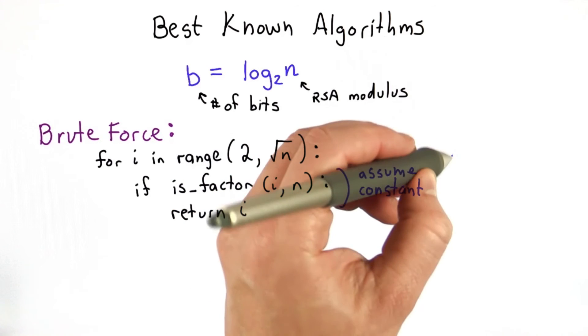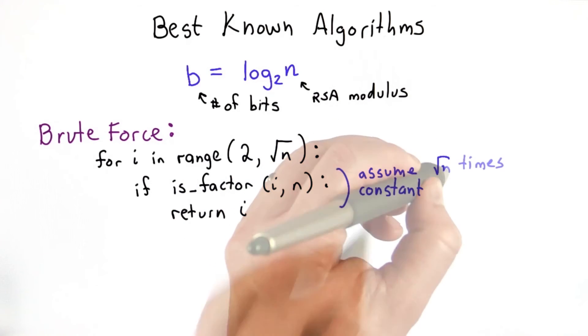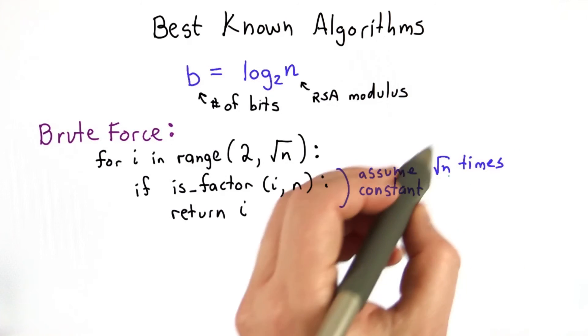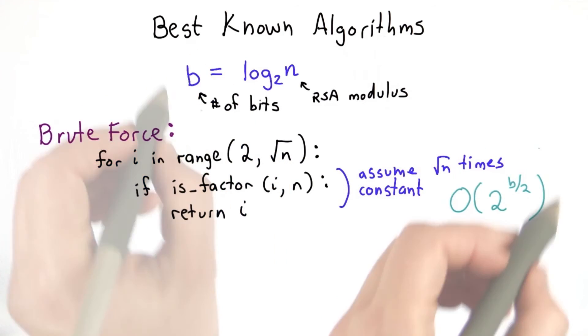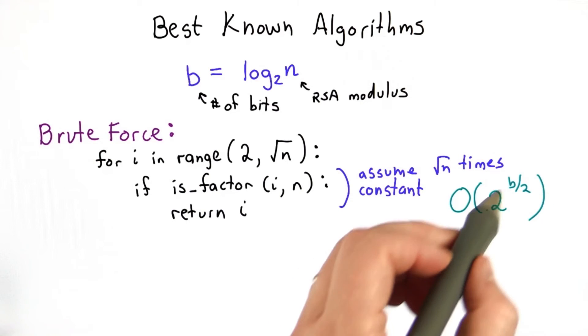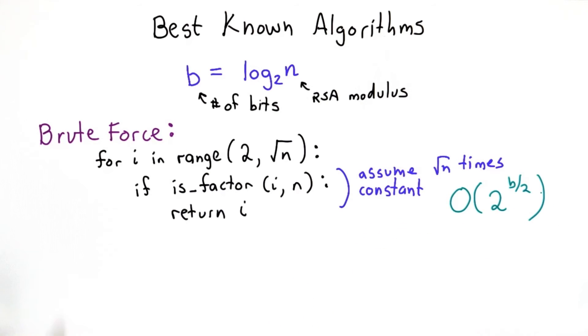Well then we're going to need to go through this loop square root of n times, which means our running time will be linear in the square root of n, but B is the log of n. So our running time will be exponential in B over 2. So this clearly is not going to work for large B.